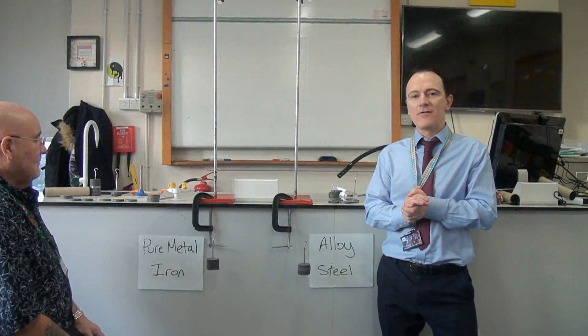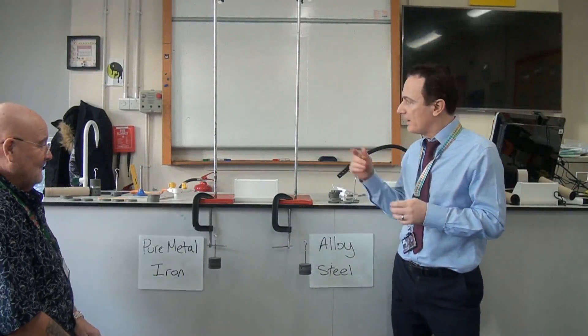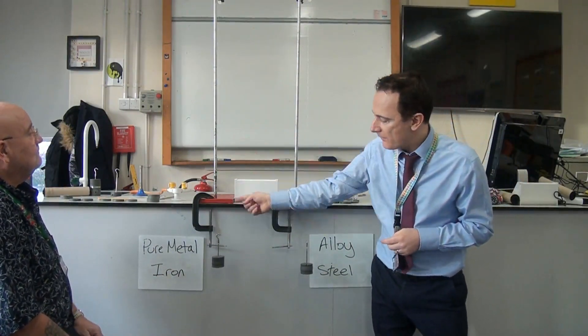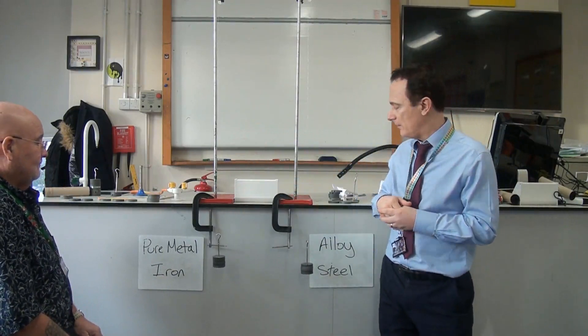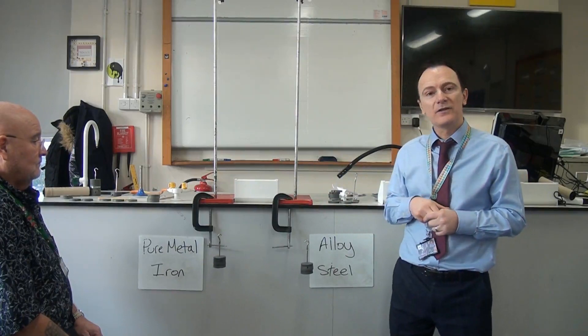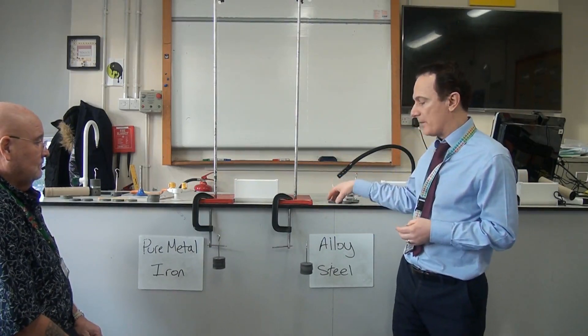Hi everyone, in this video I'm joined by Mr Jones who is going to help me test these two pieces of metal to destruction. What we've got here is a very thin wire of iron which is a pure metal, and a very thin wire of steel which is an alloy - it's iron mixed with some carbon.